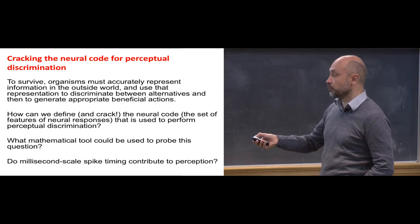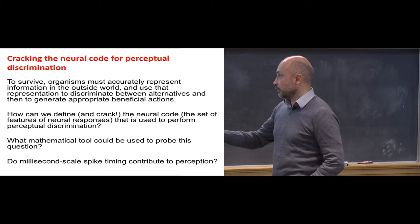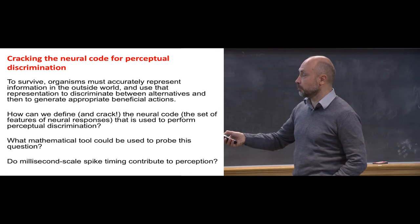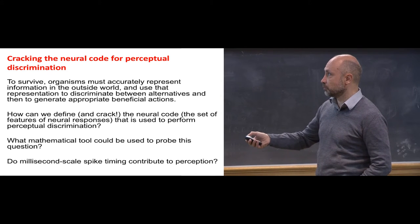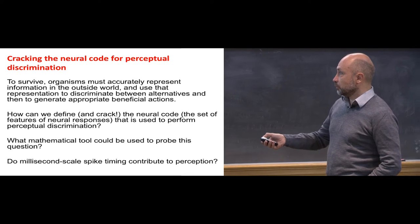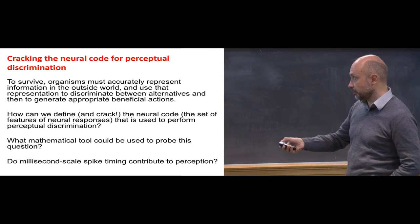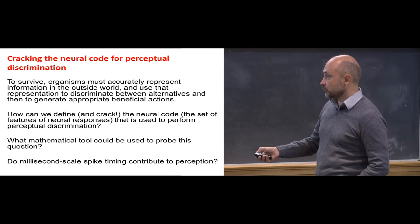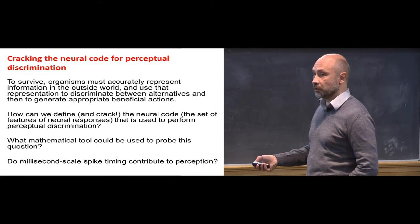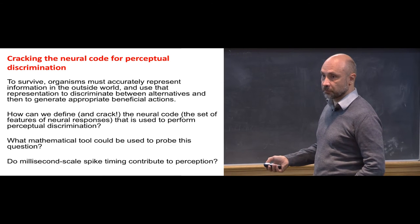I would like to show how we can define this neural code and then crack it or determine it from experimental data. Understanding what neural code is used to perform certain functions — in our case, perceptual discrimination — is a prerequisite to understanding brain functions. For example, if spike timing is an important part of the neural code, then you cannot use a rate model; you need your model to reproduce precisely the times of the spikes.